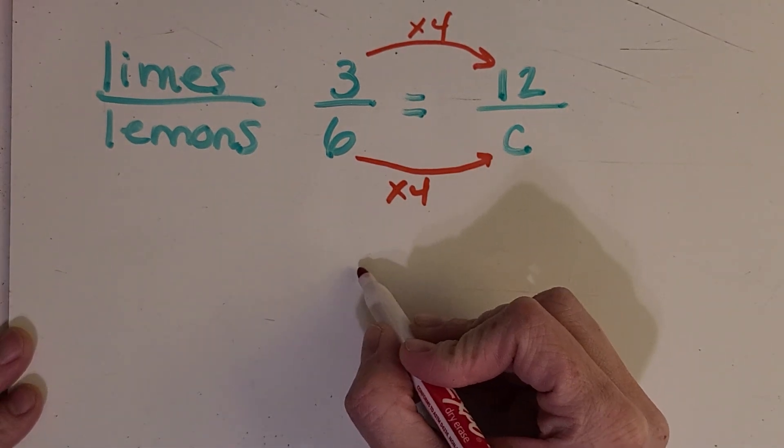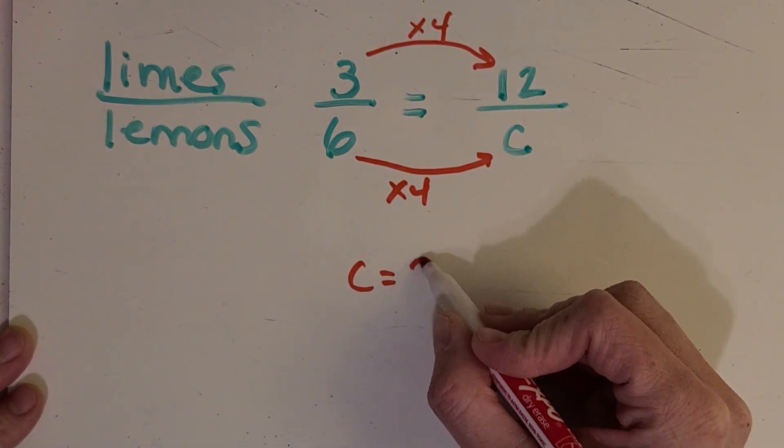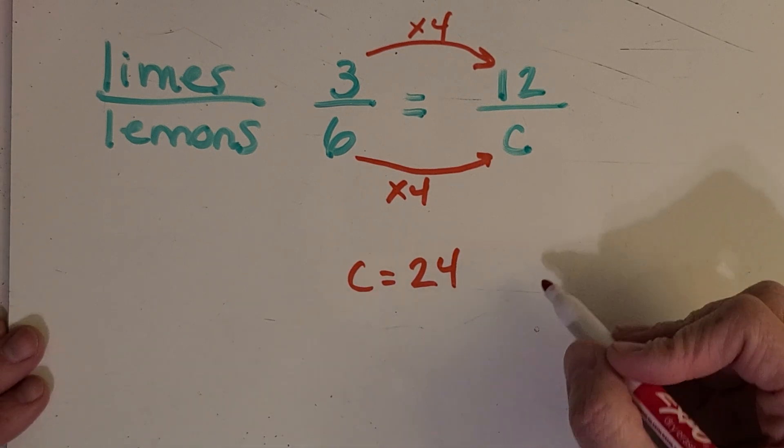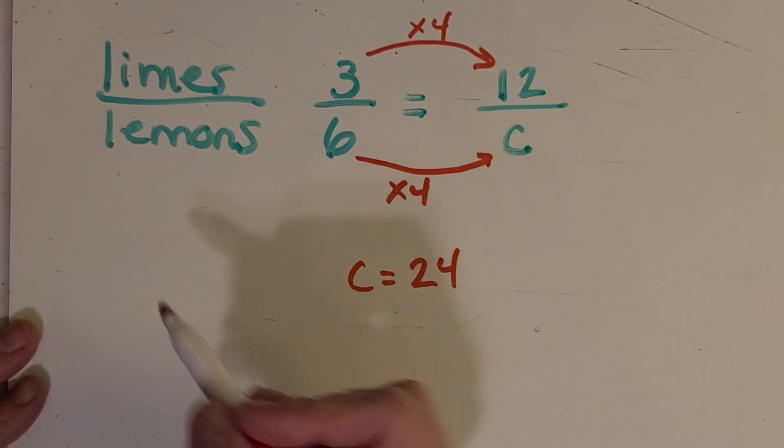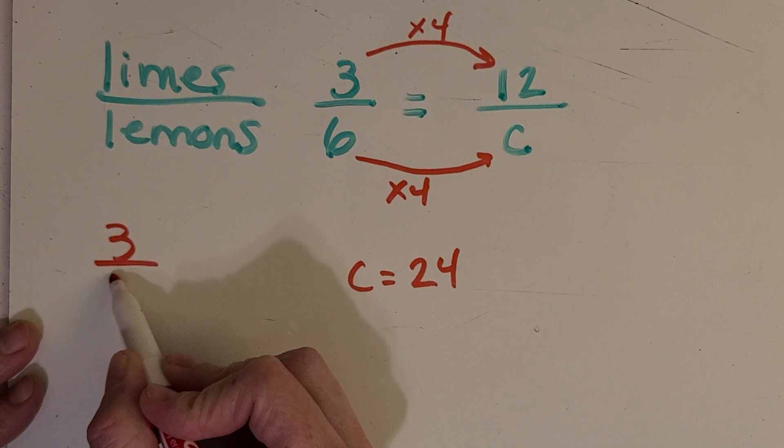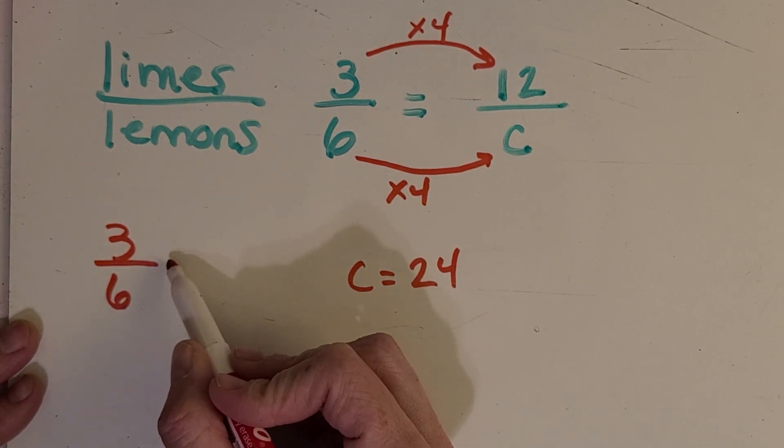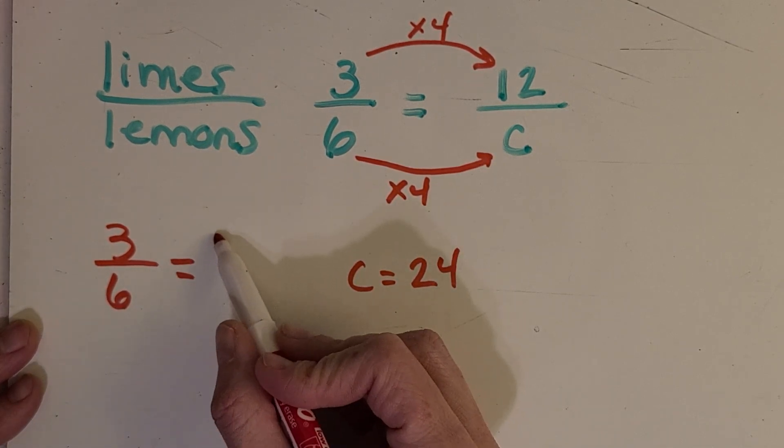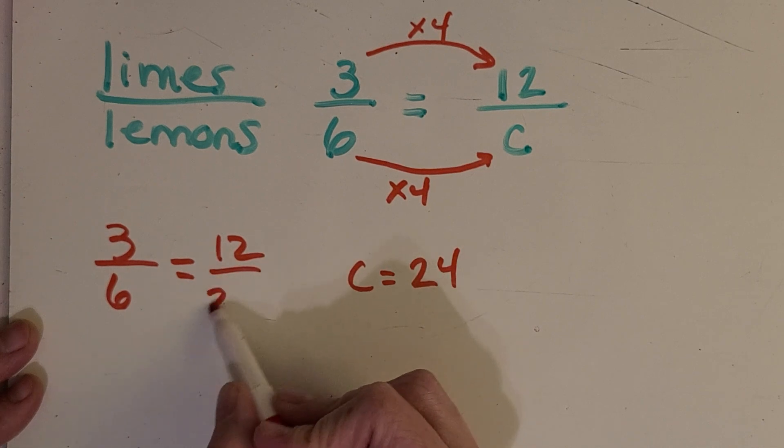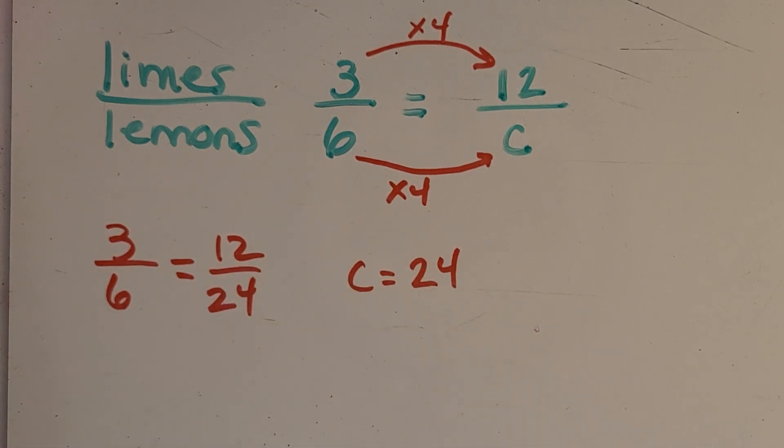Okay, awesome. C equals 24. So now we can look at the proportion like this. We can look at 3 over 6 is equal to 12 over 24. Okay, great job solving your first proportion.